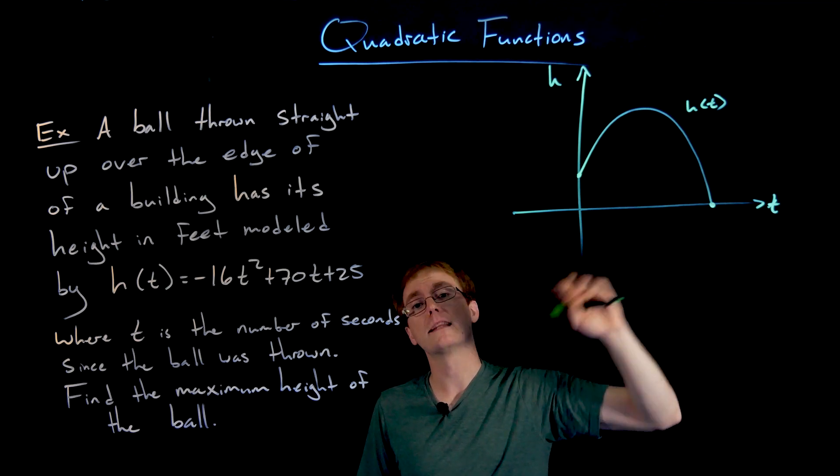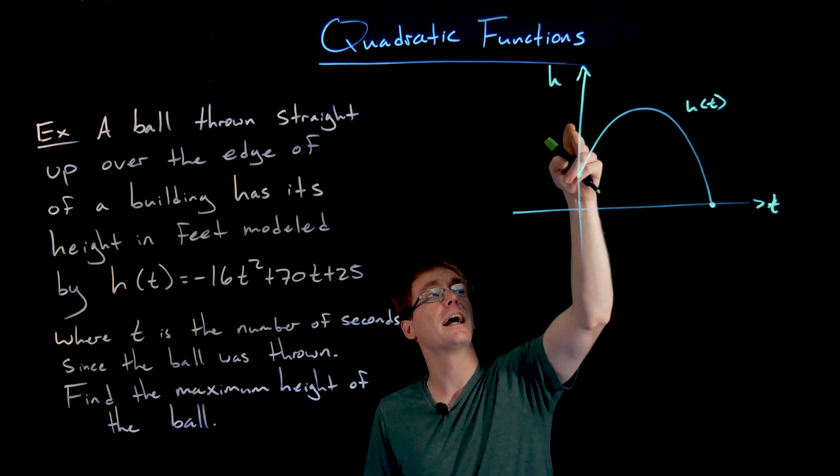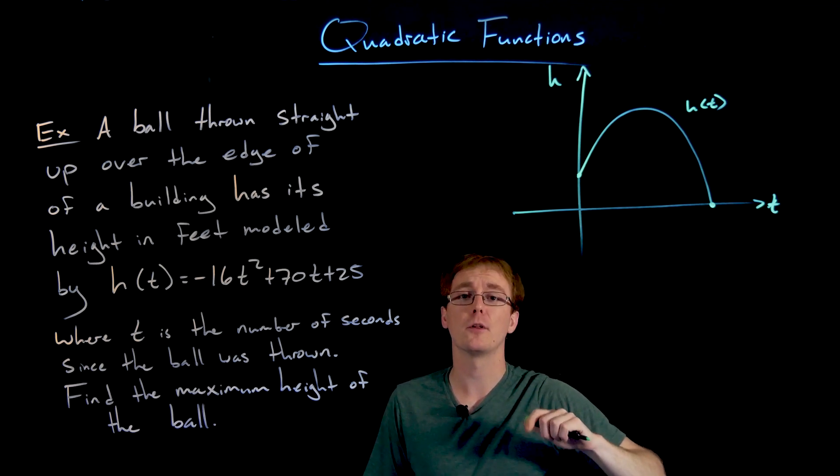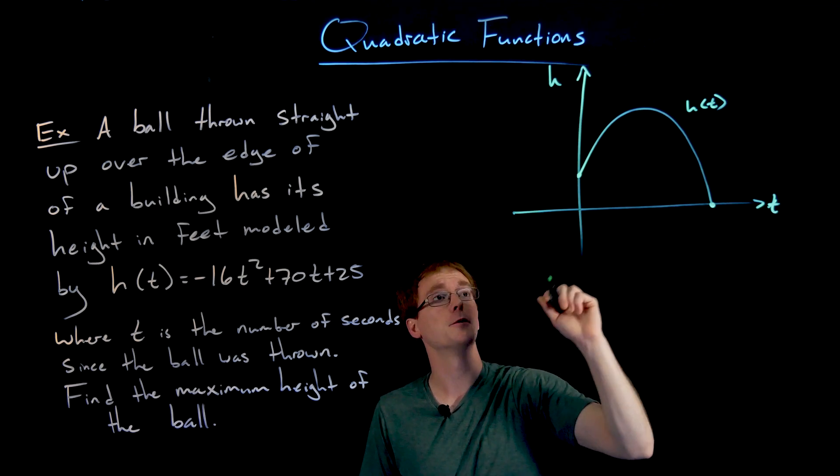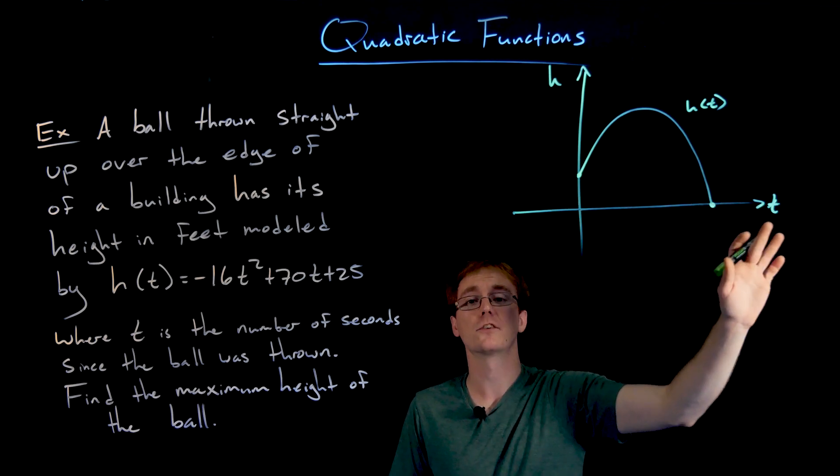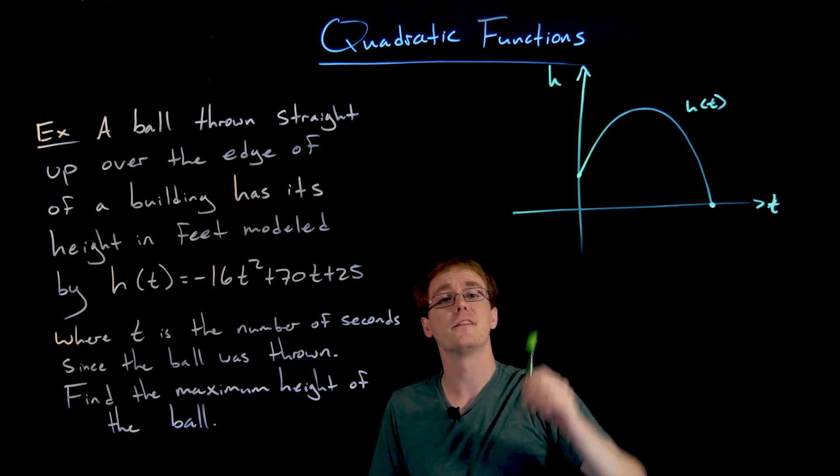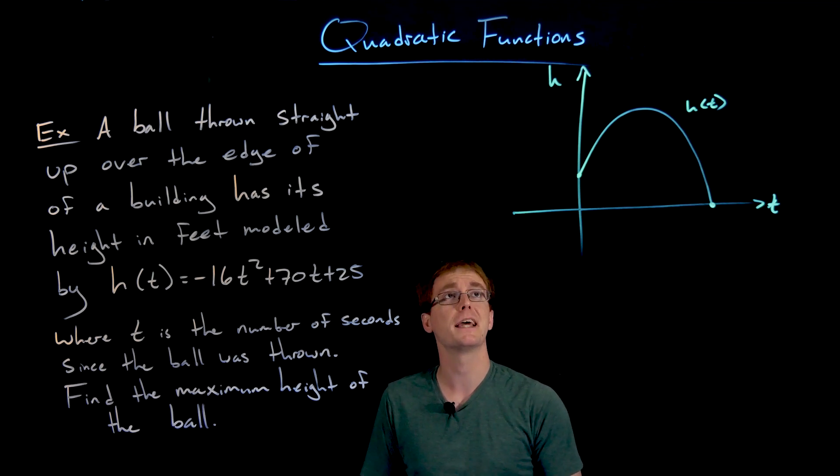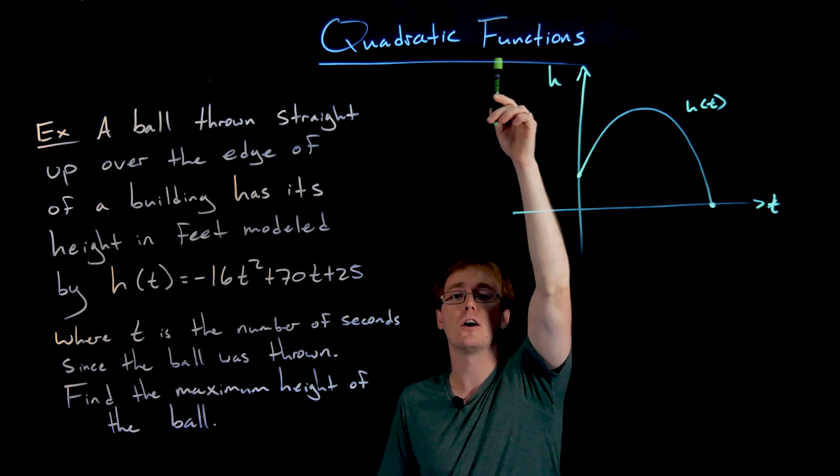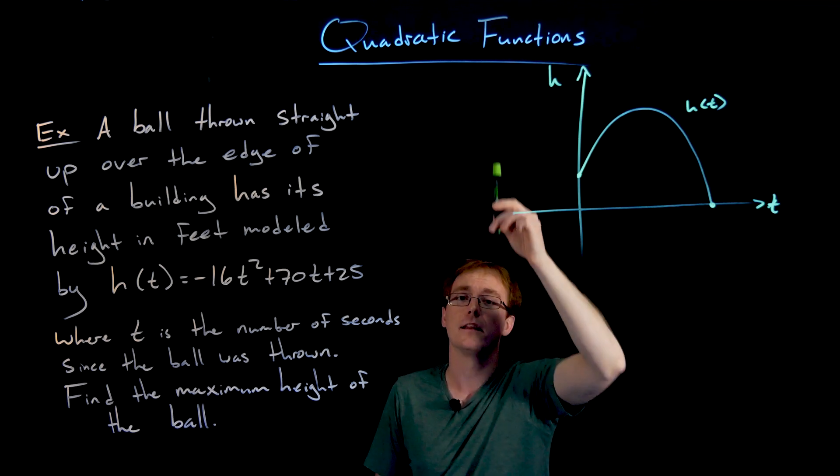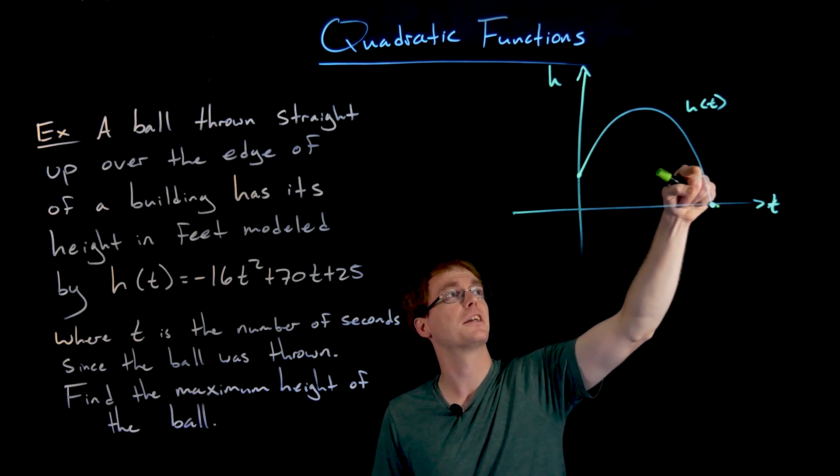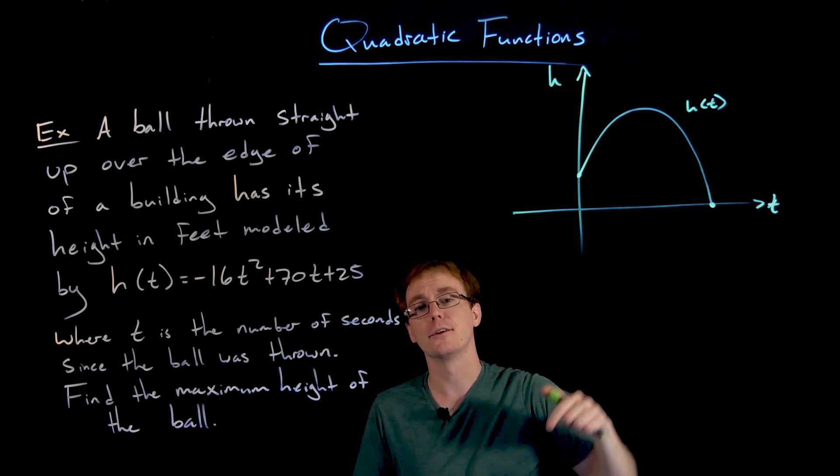One thing to remember when looking at this height graph is this is height versus time, not vertical height versus horizontal height. If we throw this ball straight up over the edge of the building, we don't want to misinterpret this as thinking it's traveling horizontally away from the building. It's going straight up for a bit, reaches its maximum height, starts to fall back down, eventually going past the point of the building where we threw it until it hits the ground.